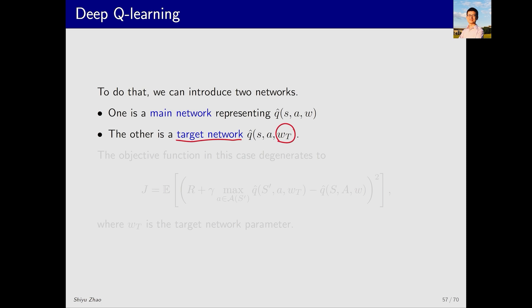In the main network, W is constantly being updated. Whenever new samples come in, W is updated. However, the target network is not updated continuously. Instead, only after a certain period, W of the main network is copied over to the target network.